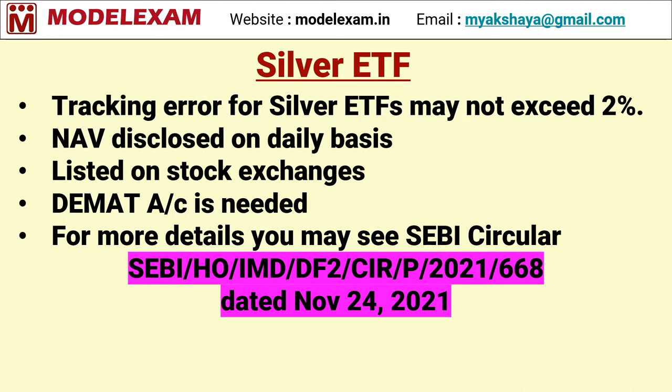Tracking error for silver ETF should not exceed 2 percentage. In simple terms, tracking error is the difference between performance of silver and performance of silver ETF. For example, in a particular year, silver has given 30 percentage return, while silver ETF has given 29 percentage return.